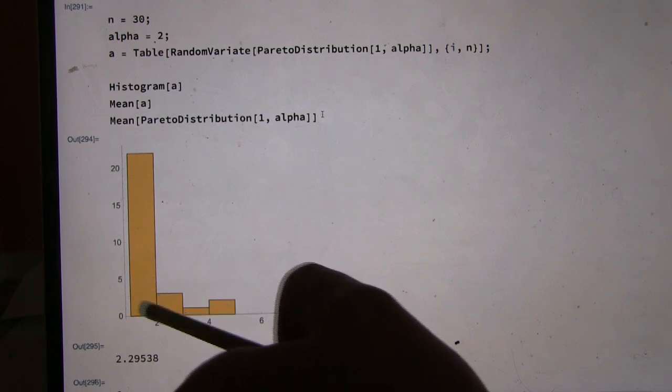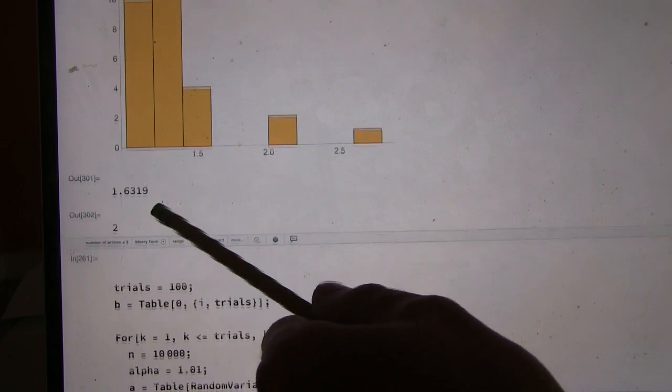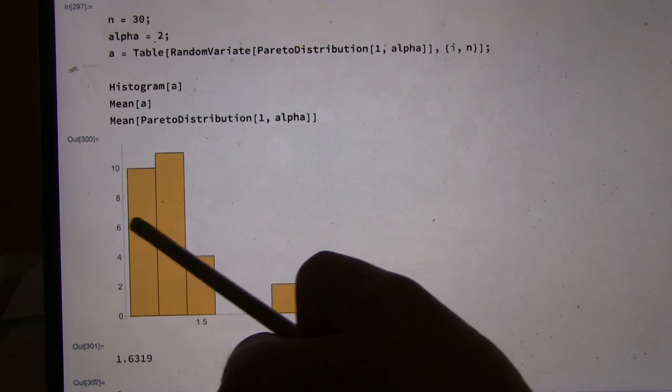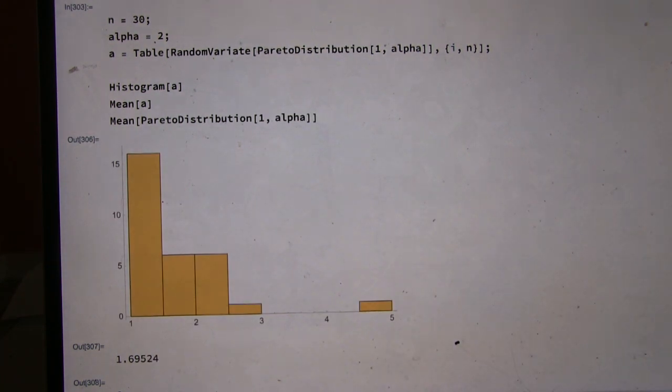So if I do it again, now I get a mean of 1.6 from my sample. And the true mean is 2. So I am kind of bouncing around a little bit here, maybe more than I might expect.